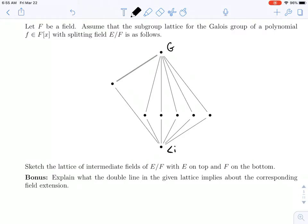So that'll be, say, the identity map on the bottom. And these dots represent subgroups. There's all these six intermediate subgroups between the identity and G. And the question says to sketch the lattice of intermediate fields of E over F. So this G is the Galois group of E over F.